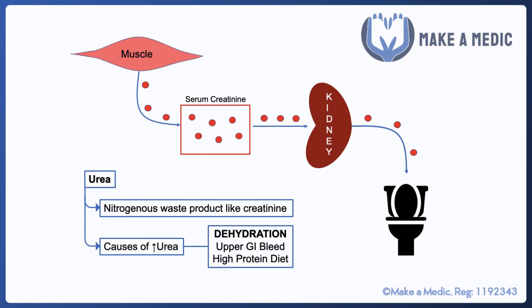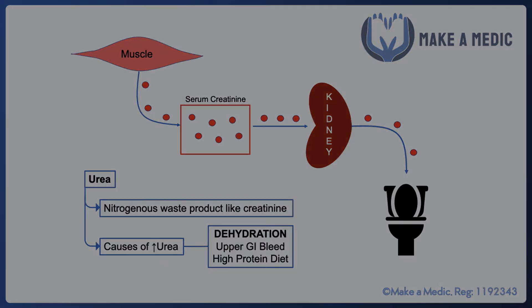Given that urea is also a breakdown product of protein metabolism, it can also rise in an upper GI bleed, because the protein components of the blood cells get digested and metabolized by the urea cycle. Similarly, if someone has a high protein diet, that can also lead to a high serum urea concentration.